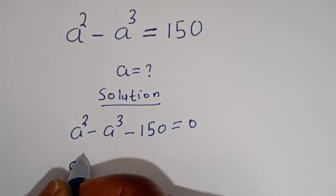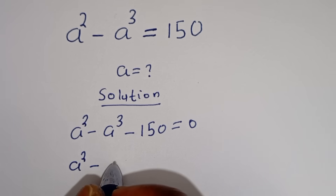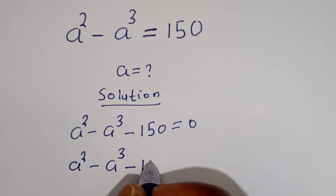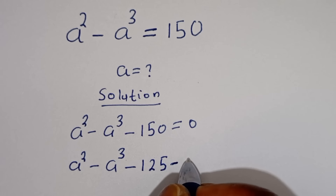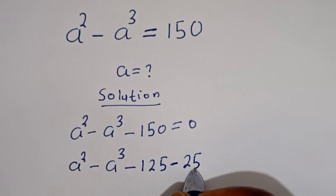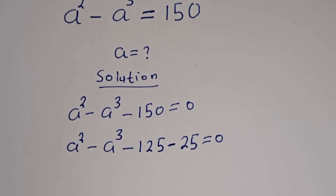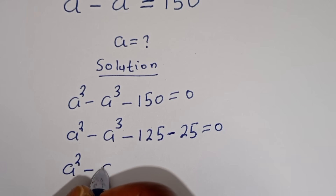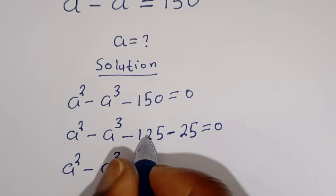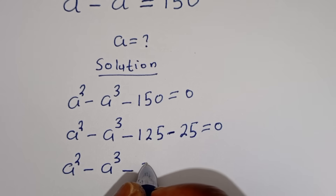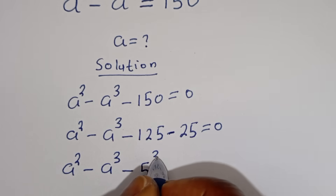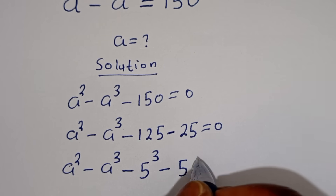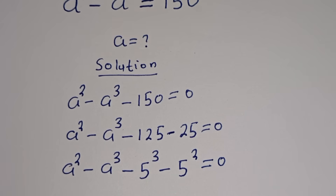We have A squared minus A to the power of 3 minus 150. This minus 150 can be written as minus 125 minus 25. And minus 125 can be written as minus 5 to the power of 3, and minus 25 can be written as minus 5 squared, all equal to 0.